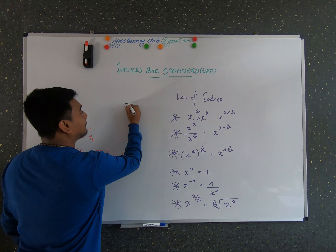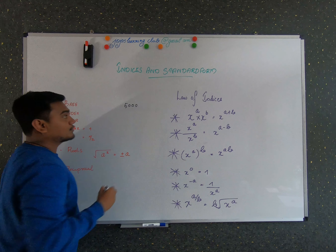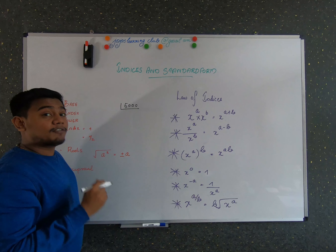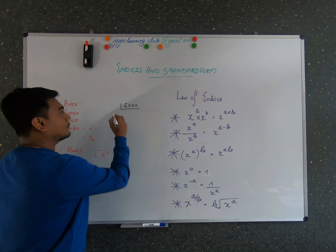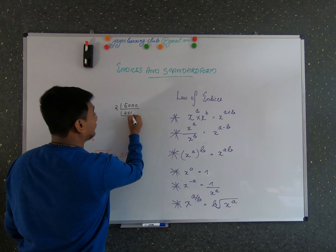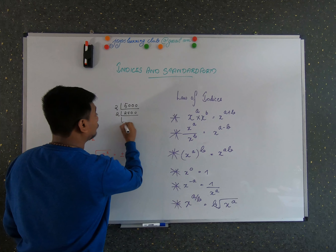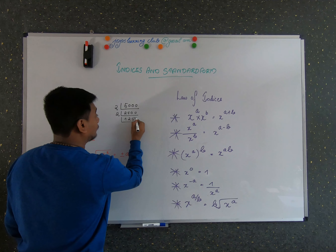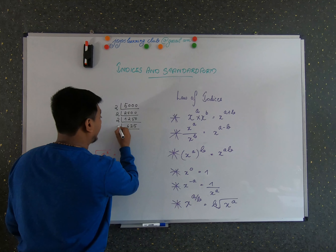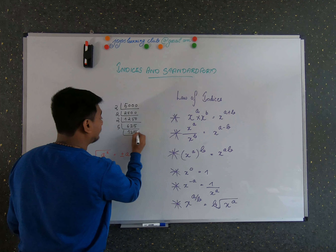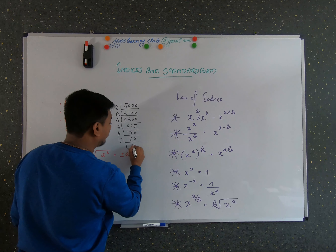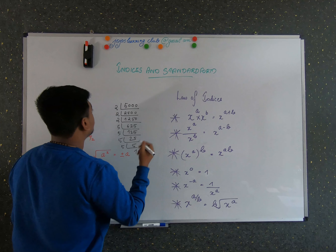Let's take the number 5000 and find all the lowest common factors. Starting with 2: 5000 divided by 2 gives 2500, again by 2 gives 1250, again by 2 gives 625, then by 5 gives 125, by 5 gives 25, by 5 gives 5, and by 5 gives 1.